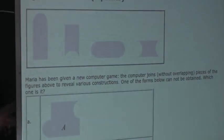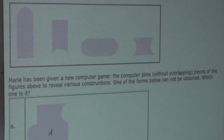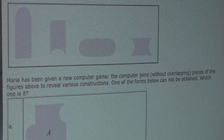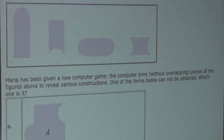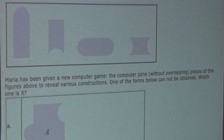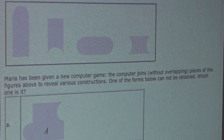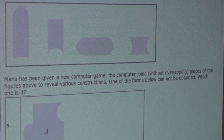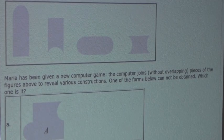So the question is: Maria has been given a new computer game. The computer joins, without overlapping, pieces of the figures above to reveal various constructions. One of the forms below cannot be obtained. Which one is it?